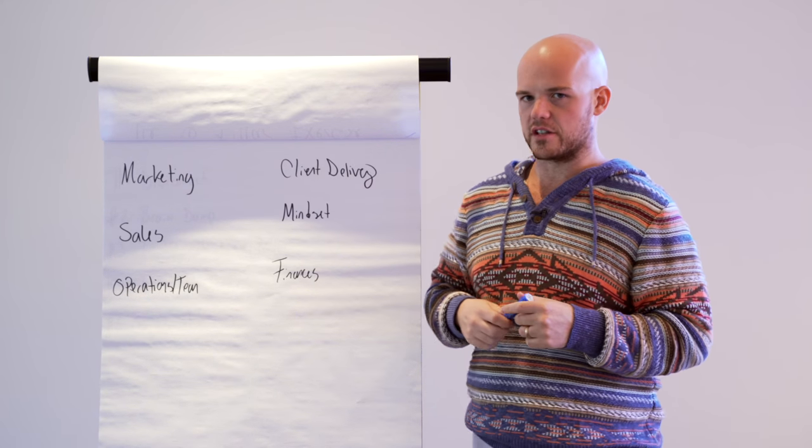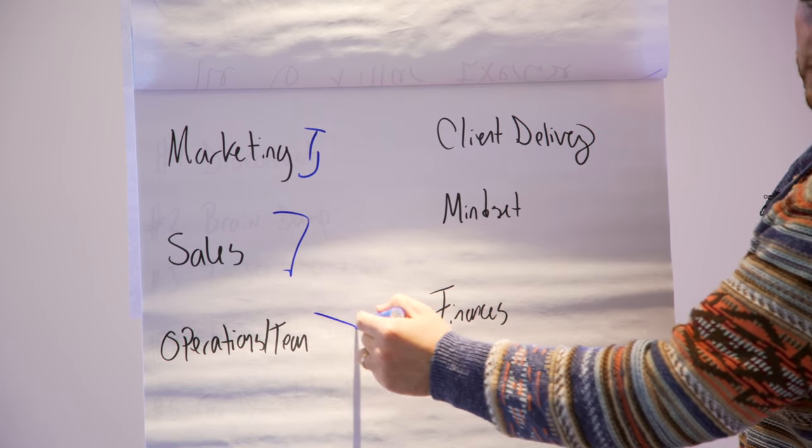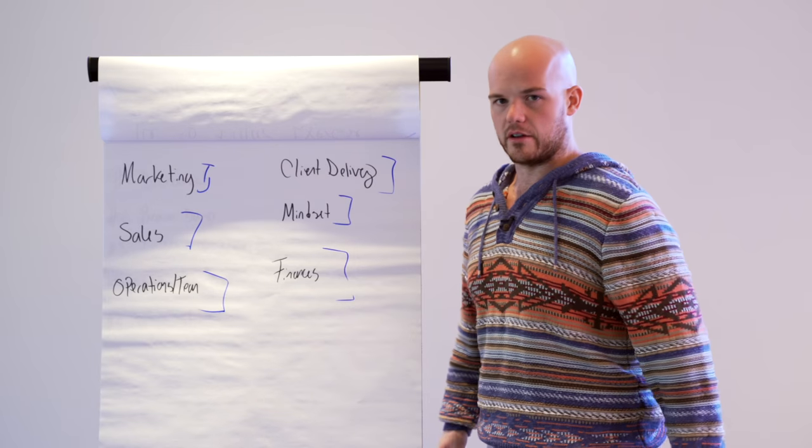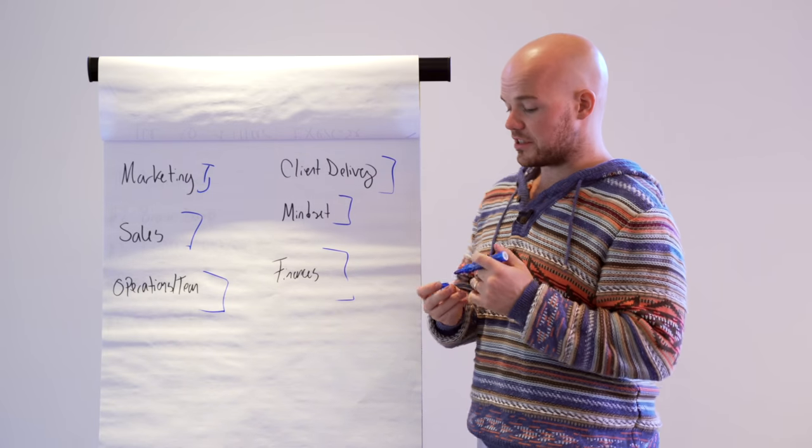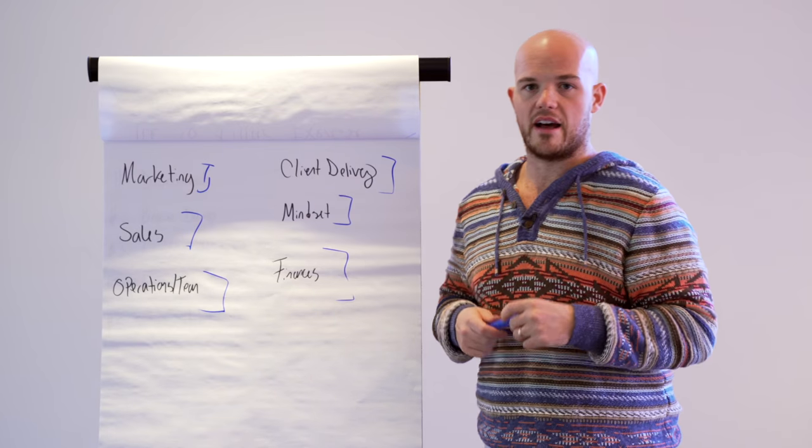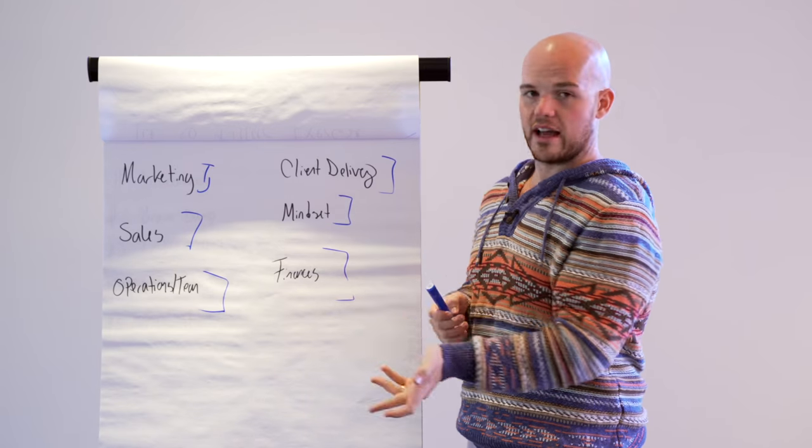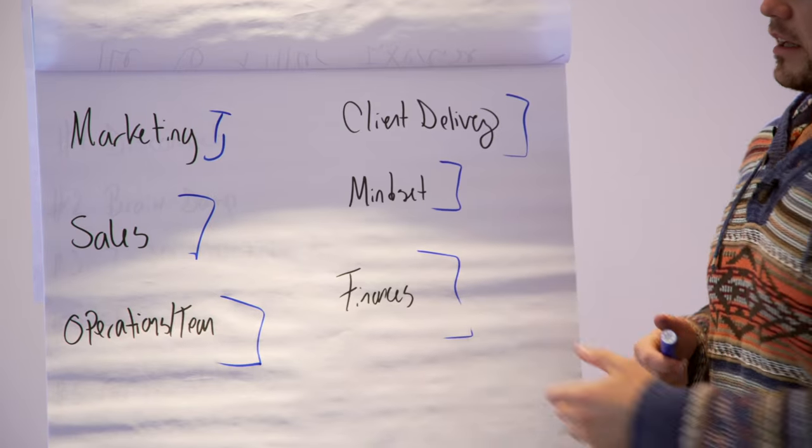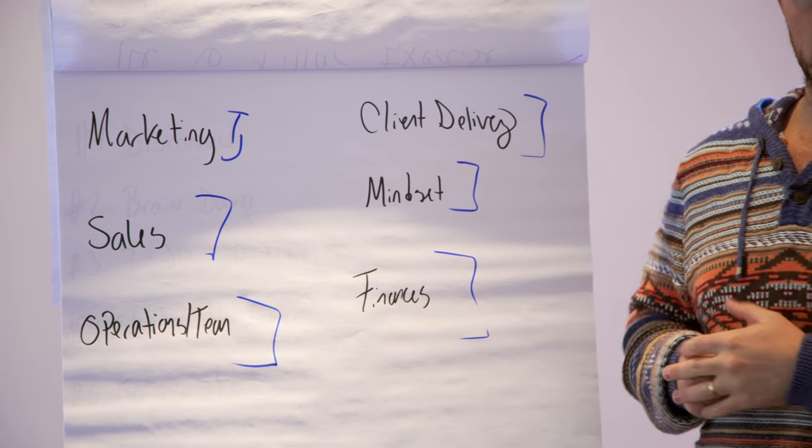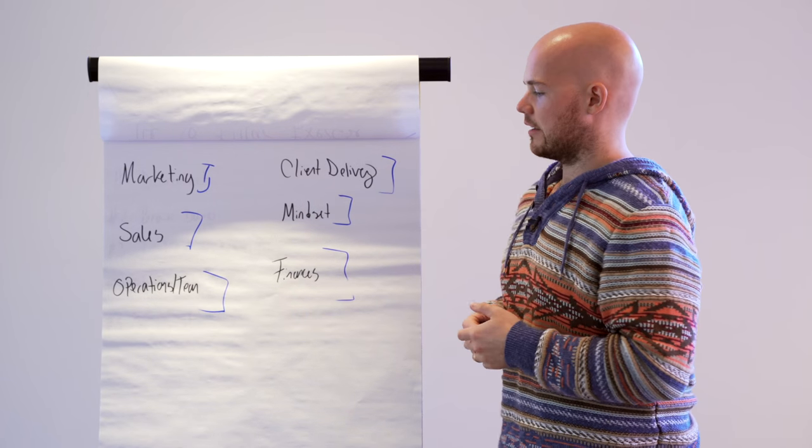There's six major parts of any business: marketing, sales, operations and team, client delivery, mindset, and finances. Every single business is reliant on these to grow. If your marketing's not working, you're not gonna have any sales. If you don't have any sales, you're not gonna have any client delivery. If you don't have client delivery, you're not gonna have any money, so you're not gonna have a business.